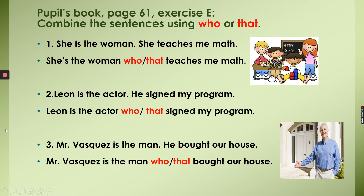Number two: Leon is the actor. He signed my program. We can say: Leon is the actor who signed my program. Or: Leon is the actor that signed my program.